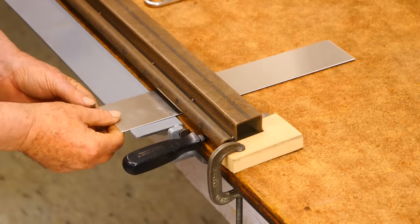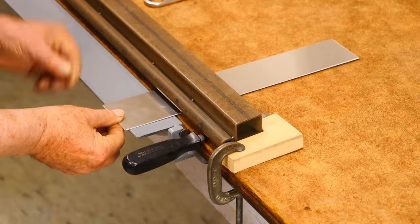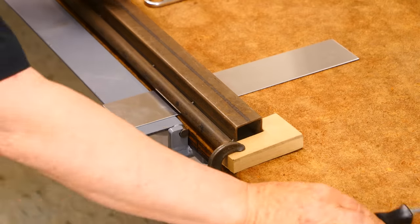Then, the metal to be bent is slipped underneath the radius die, and the loose end of the die is clamped down tight.